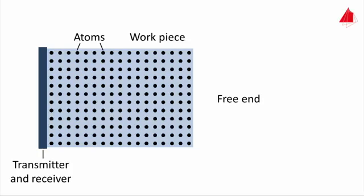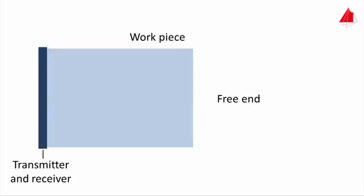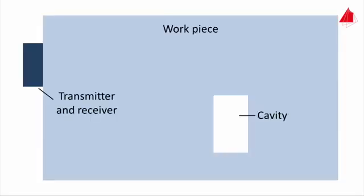So if a sound wave is generated at one end of a workpiece, it will travel through the material with its speed of sound. At the free end of the workpiece, the sound wave is reflected and it returns to the transmitter, which then acts as a receiver.